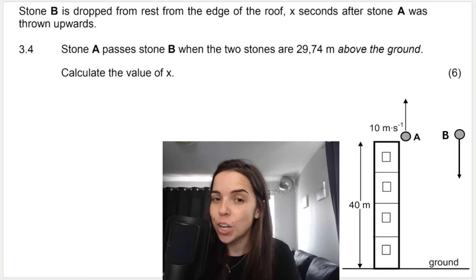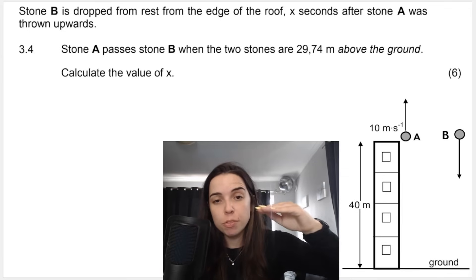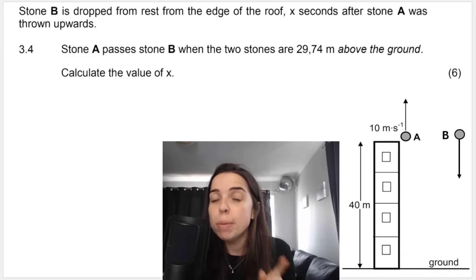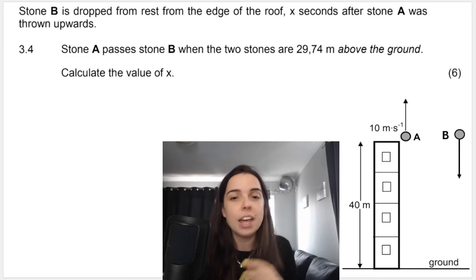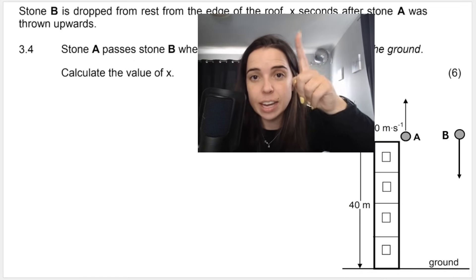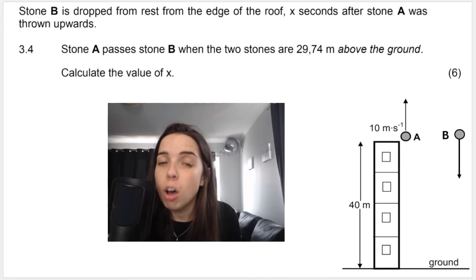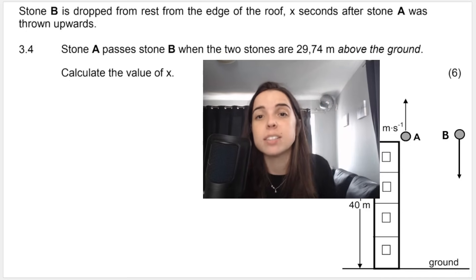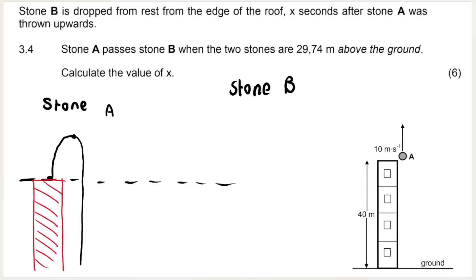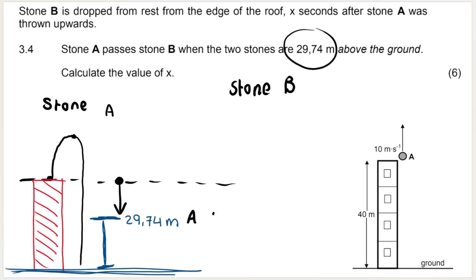Question 3.4 is the level 4 difficult question involving the second object. Stone A travels from the top of the building to maximum height and back down. Stone B is dropped from rest from the edge of the same roof, X seconds after stone A was thrown upward. Stone A passes stone B when both stones are 29.74 meters above the ground. We need to calculate the value of X.